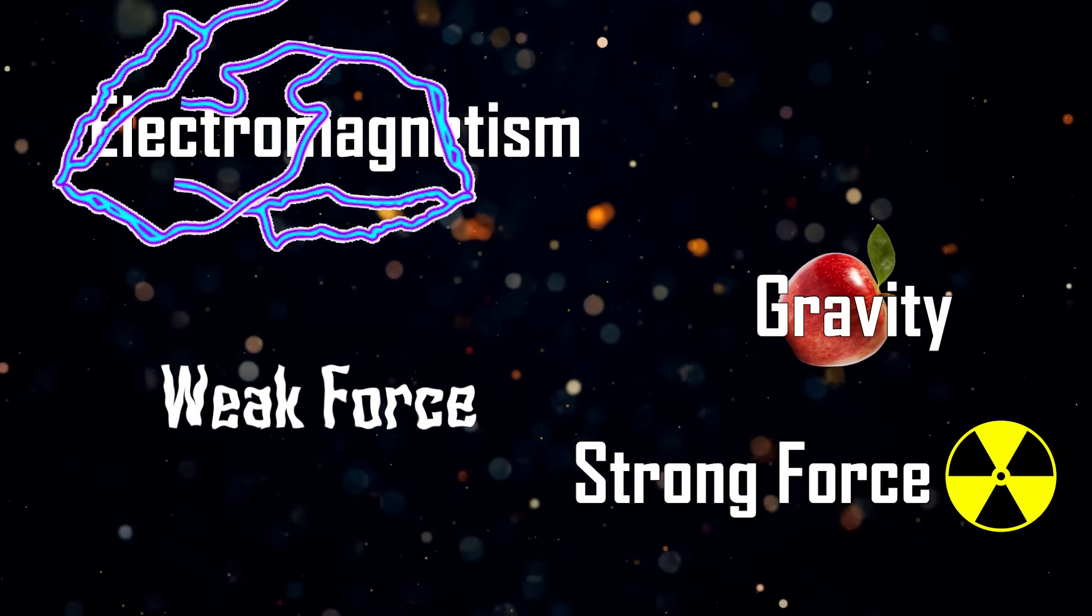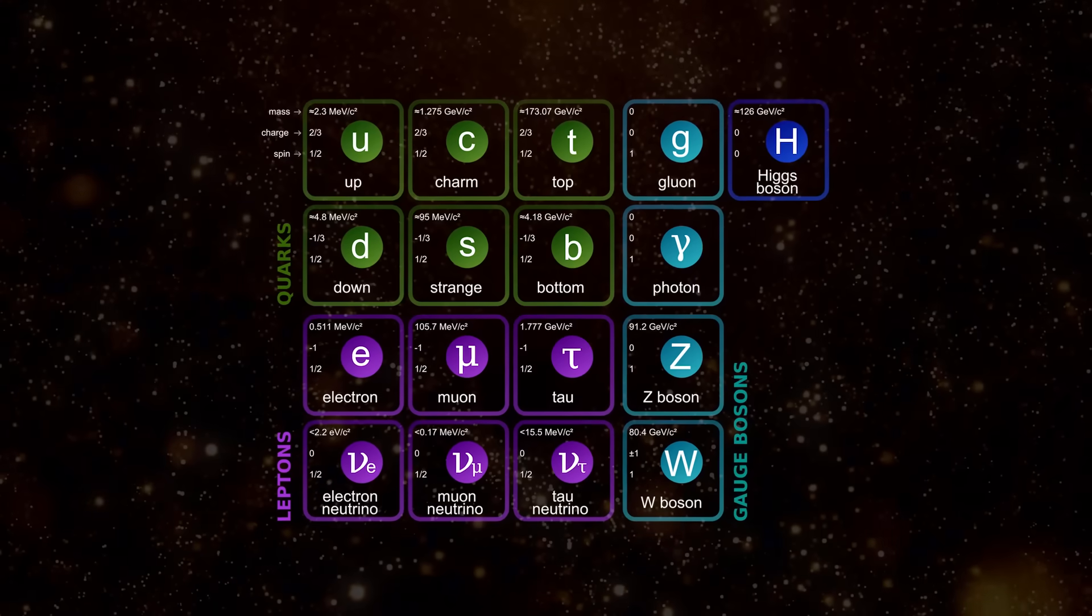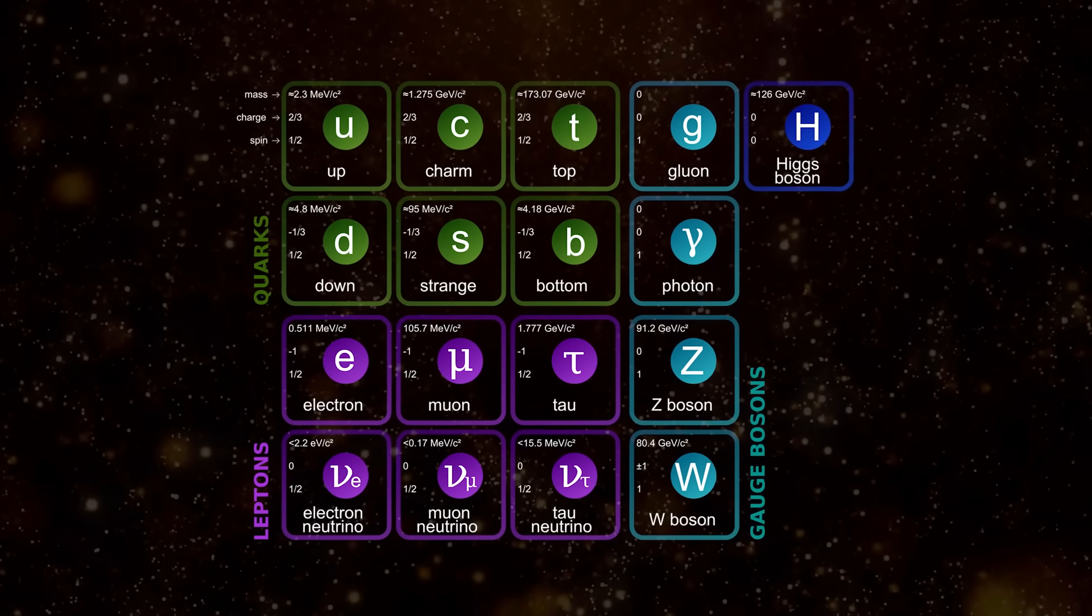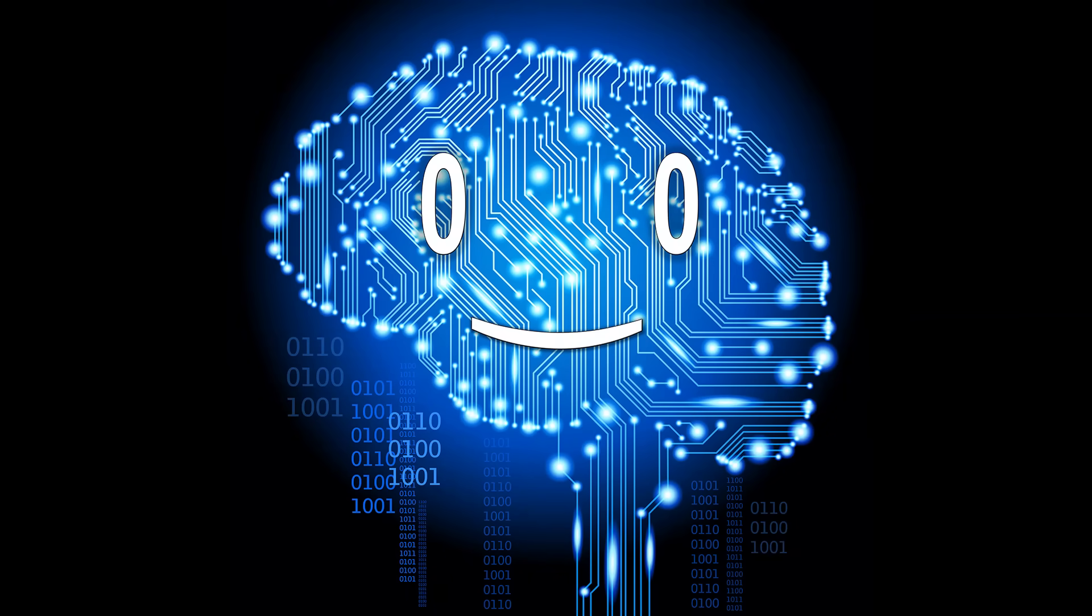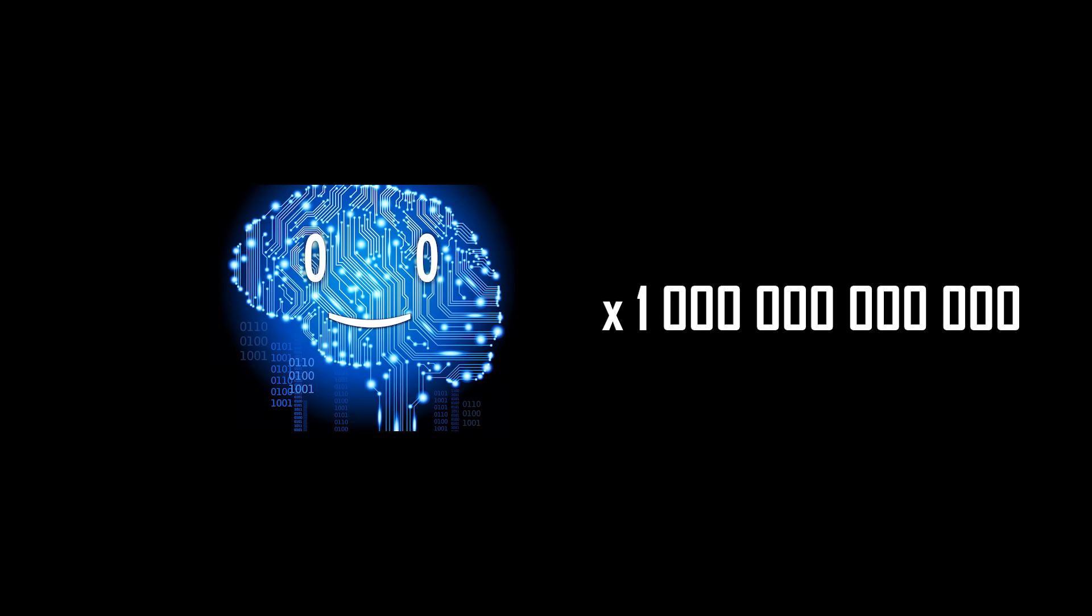Now we are at 10 to the power of negative 12 seconds after the Big Bang. All the forces that we know of are now present, and all the fundamental particles have been created. But the temperatures are still too high for atoms to form. Everything was a dense quark gluon soup. To put things into perspective, everything that we have so far talked about would have happened 1 trillion times over in the time it would take you to say Mississippi.